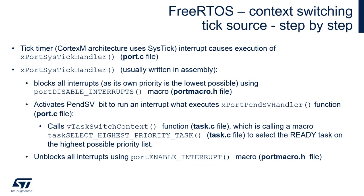Within the PendSV interrupt vector, vTaskSwitchContext is called, stored in task.c. This function switches the context starting by calling the macro taskSELECT_HIGHEST_PRIORITY_TASK, also from task.c, which selects the ready task within the highest possible priority list. Once the proper task is selected, everything is configured for the new one. The interrupt procedure of PendSV then unblocks all interrupts using the PortEnableInterrupt macro defined in portmacro.h, and execution continues with the newly selected task.